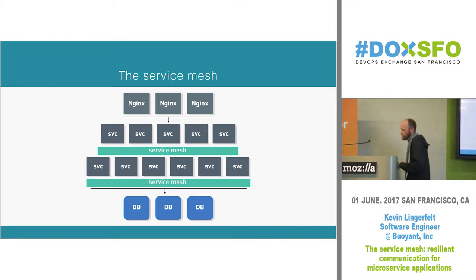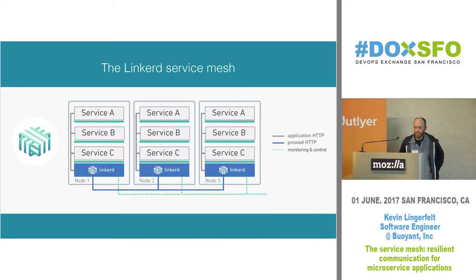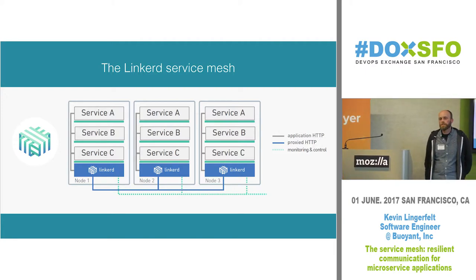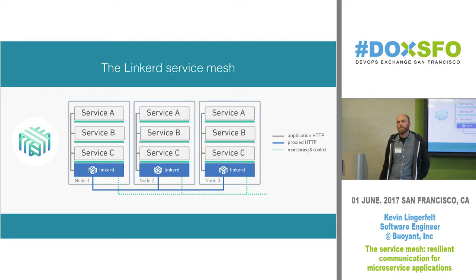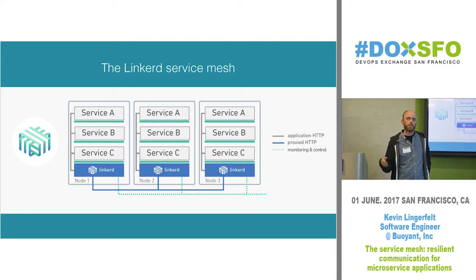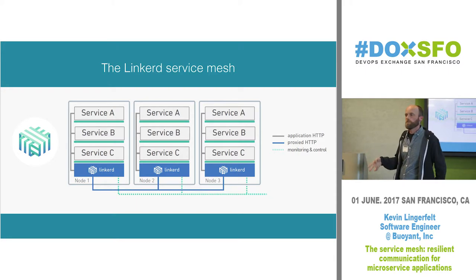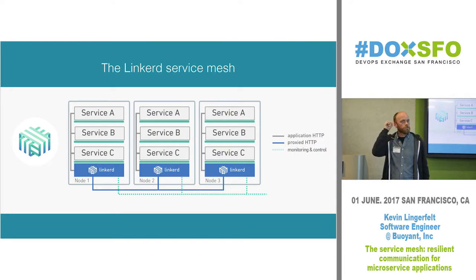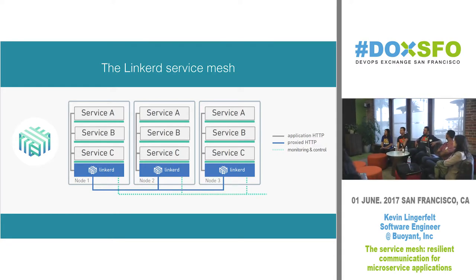Linkerd does this. It's an open source project you can run yourself. It uses Finagle, so it has a lot of advanced RPC mechanisms. In a typical deployment you run one per node — you can also run it as a sidecar in a scheduled environment. Service A on node one wants to talk to service B: it talks to its local Linkerd, Linkerd figures out which instance is likely to respond fastest, and forwards the request there. It gives you monitoring and control over it too.